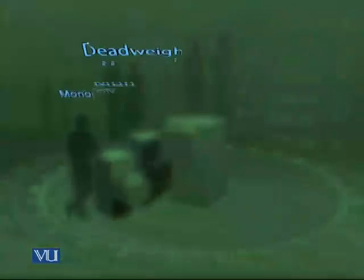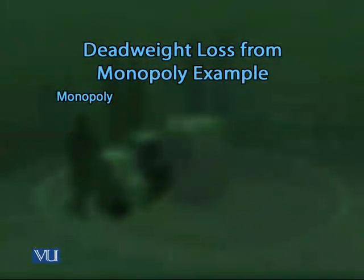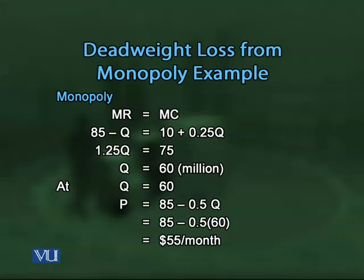Now assuming PTCL reverts from competitive to monopoly, we find the profit maximizing level of output by equating marginal revenue (MR = 85 − Q) to marginal cost (MC = 10 + 0.25Q) and solving for Q. This gives Q = 60 million customers, compared to 100 million in the competitive case.